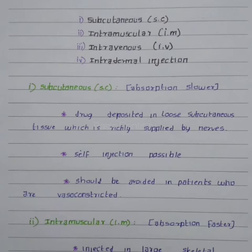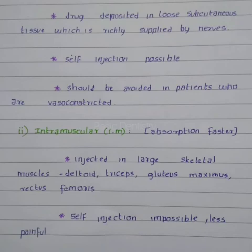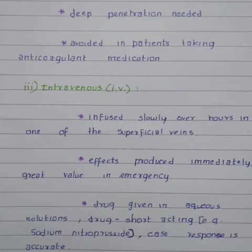Intramuscular injection is the most common parenteral route, abbreviated as IM. Absorption is faster, and the drug is injected into large skeletal muscles such as the deltoid in the arm, triceps, gluteus maximus, and rectus femoris. Self-injection is not possible, and it is less painful but requires deep penetration. It is avoided in patients taking anticoagulant medication.